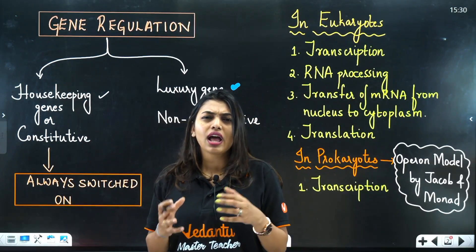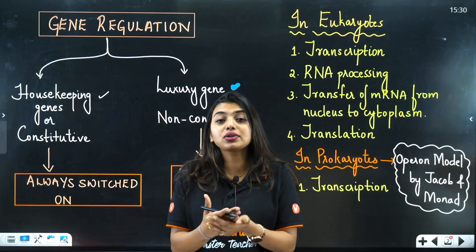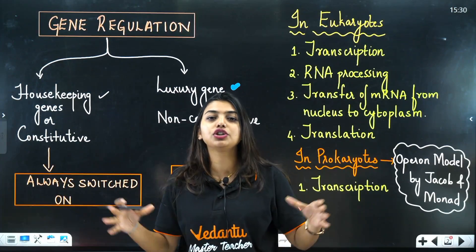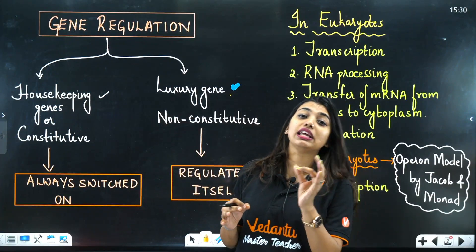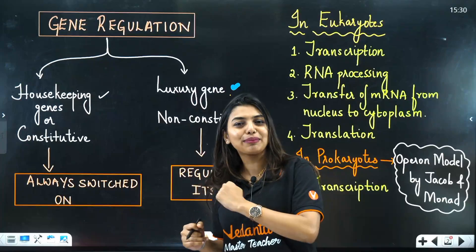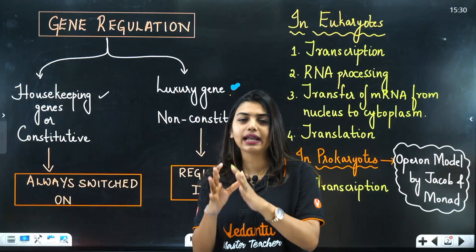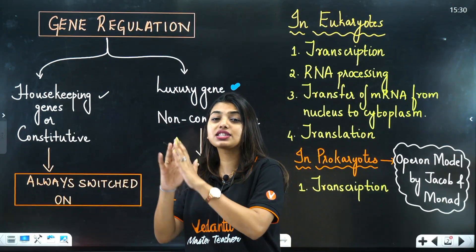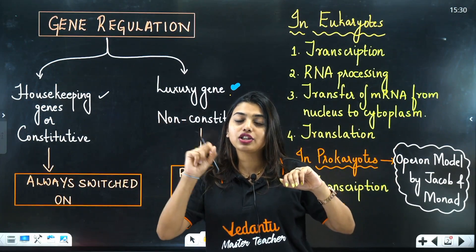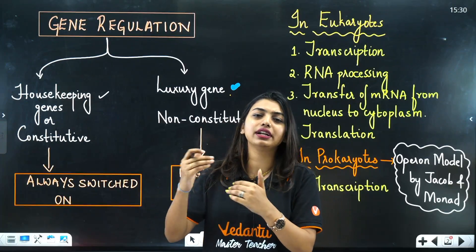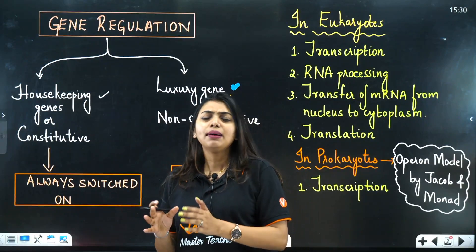From the name itself you can understand — just like a housekeeper works all day, housekeeping genes are never switched off; they continuously work. Luxury genes, on the other hand, get to take breaks — they switch off when not needed and switch on when needed again. So one gene works continuously, and the other works only when required.